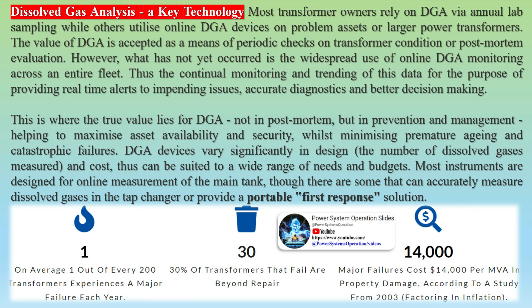DGA devices vary significantly in design, the number of dissolved gases measured, and cost, and can thus be suited to a wide range of needs and budgets. Most instruments are designed for online measurement of the main tank, though some can accurately measure dissolved gases in the tap changer or provide a portable first-response solution.